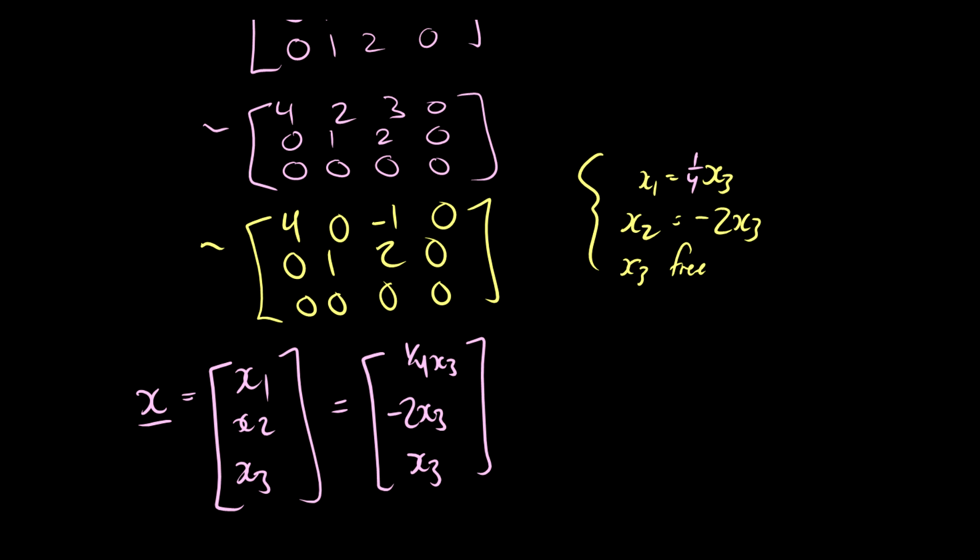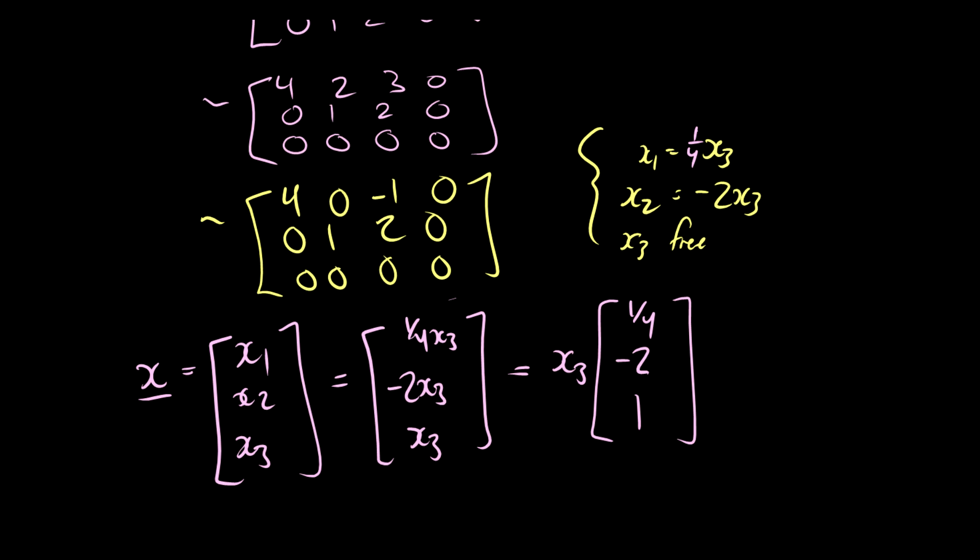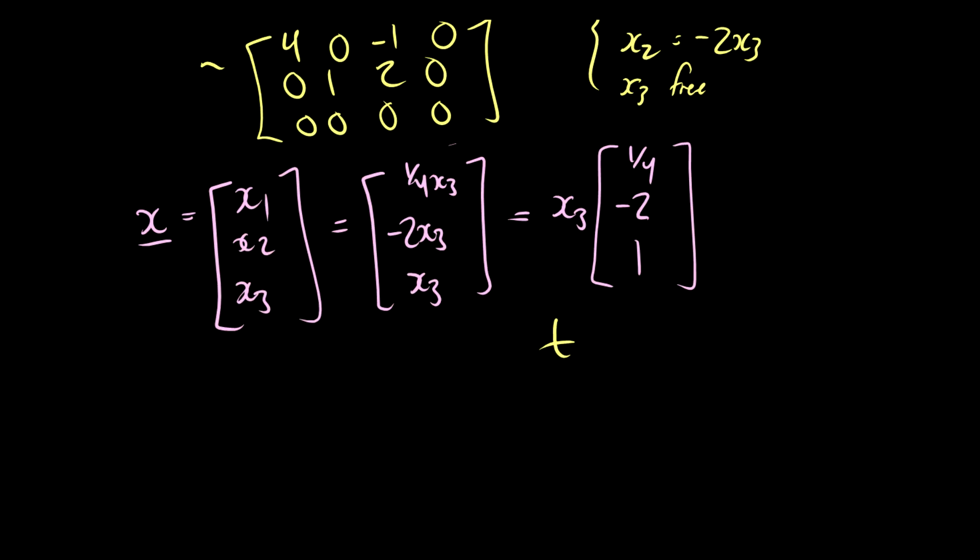So what can we do with this? Well, we can factor out x3 because x3 is a common constant in all of these. So we have x3, we can factor that out and then we're left with [1/4, -2, 1]. So this is parametric form because we have a constant t times a vector v. So instead of picking an x3 and looking at how all these numbers change, what we can do is we can pick values of x3 out here and multiply this vector by them.